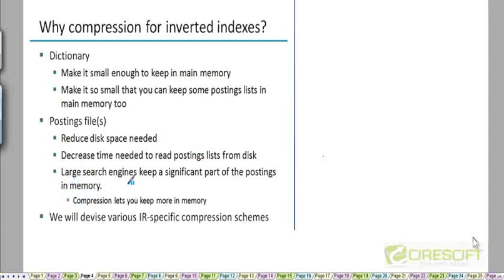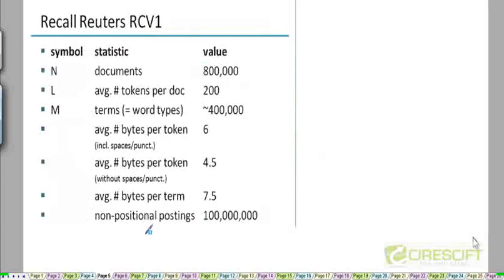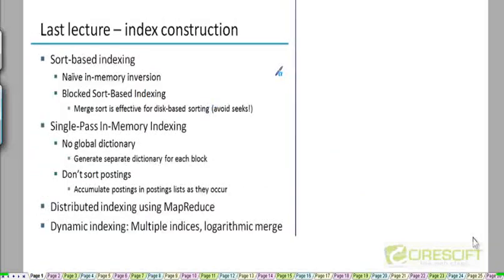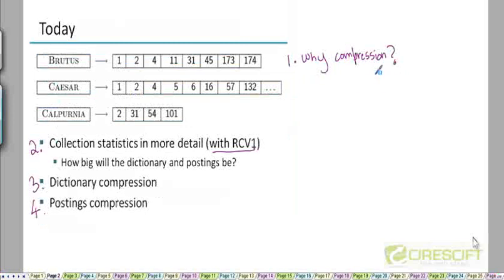And many times large search engines do keep many of the postings lists in memory. And compression is what allows you to do that. So that popular queries can be answered fast. And so we'll look at compression schemes that are specific to information retrieval systems. So that finishes with the first section that I talked about. Why do we need to do index compression?